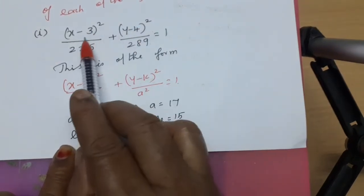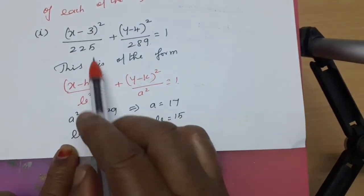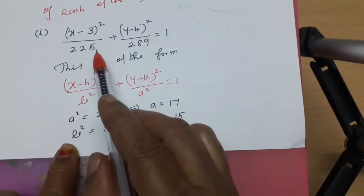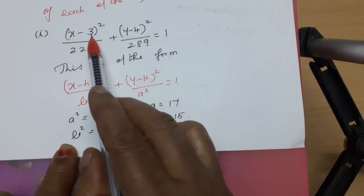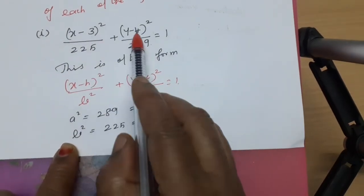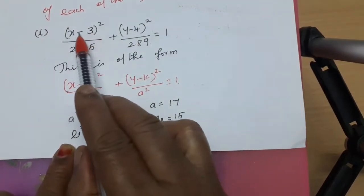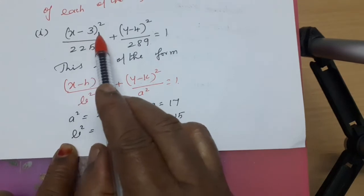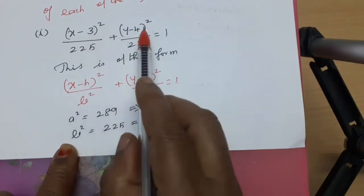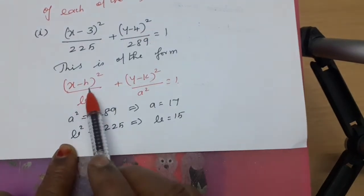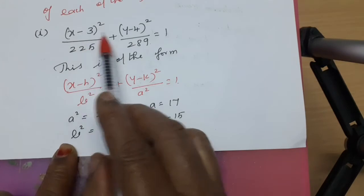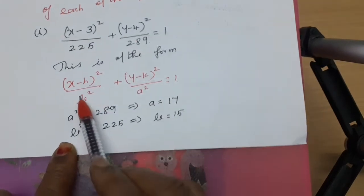Therefore the center is h comma k. h comma k is nothing but (3, 4). If there were no h and k values — just x squared by a squared — the center would be (0, 0). But here the center is (3, 4).